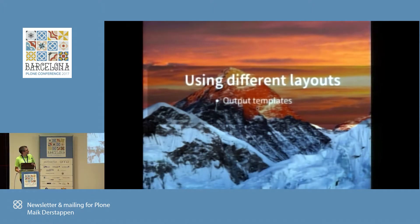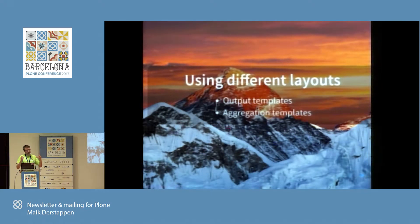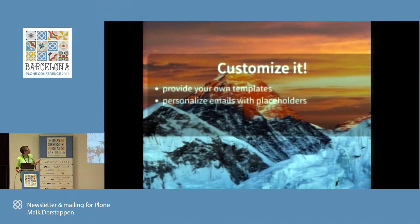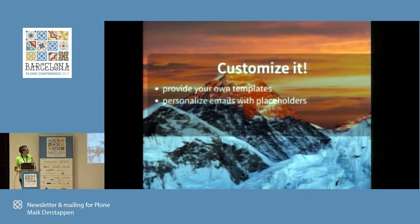You can use different layouts. You have output templates, which are basically the frame defining colors and structure. And you have aggregation templates, which define the structure of the automatically aggregated content — like whether it's a normal listing or something special. You can provide your own templates for both the output templates and the aggregation templates, by writing your own add-on and installing it next to easy newsletter.